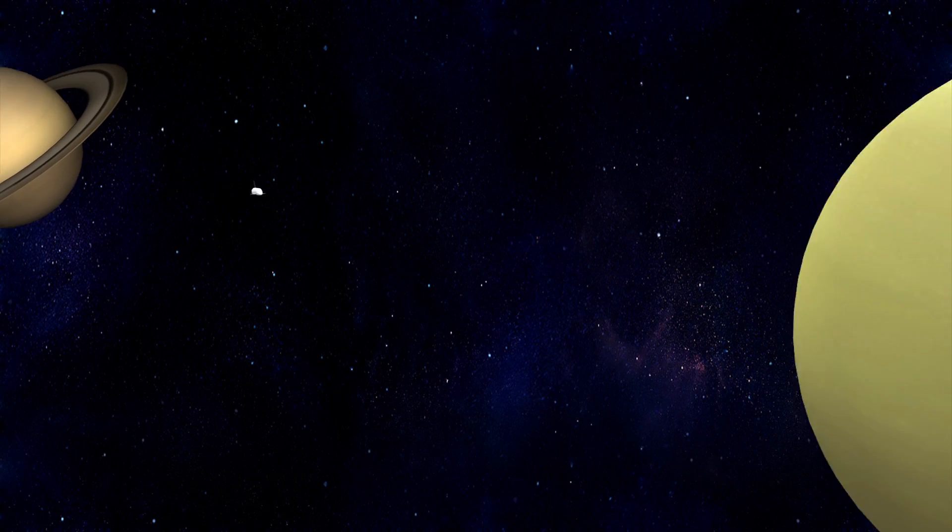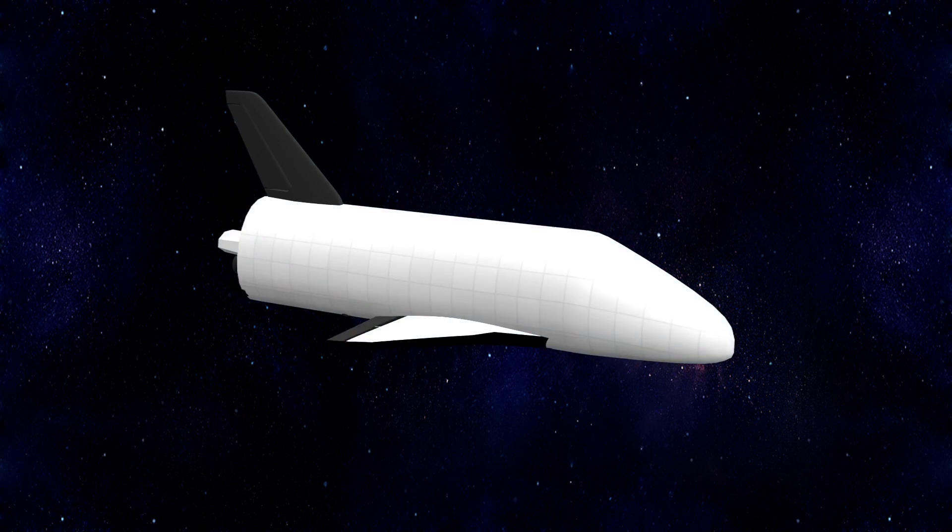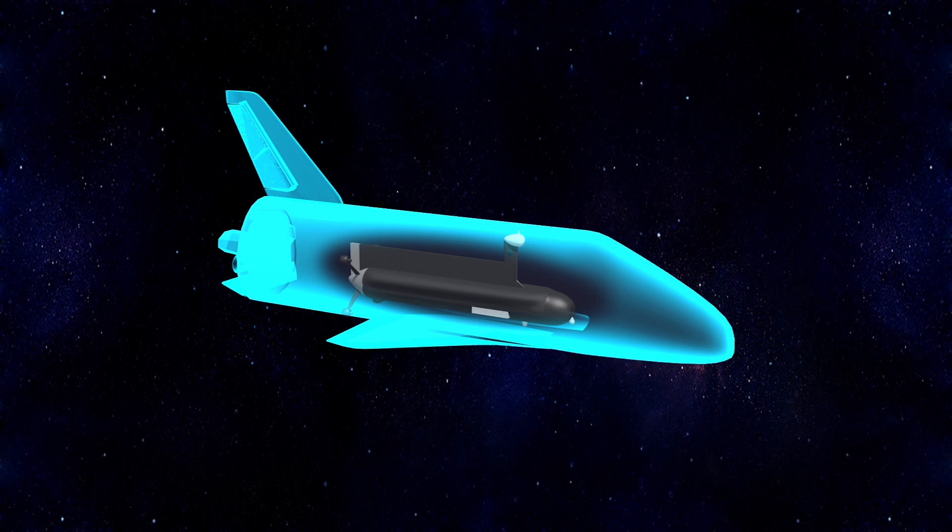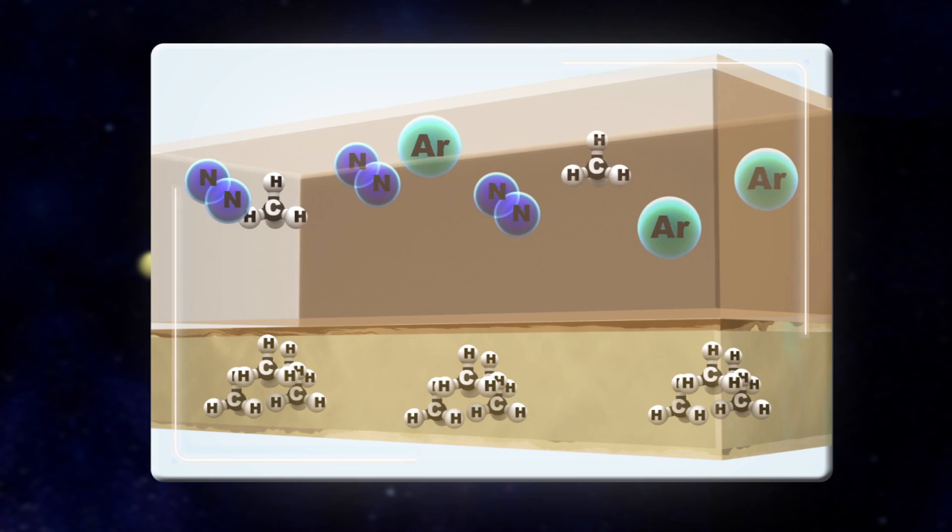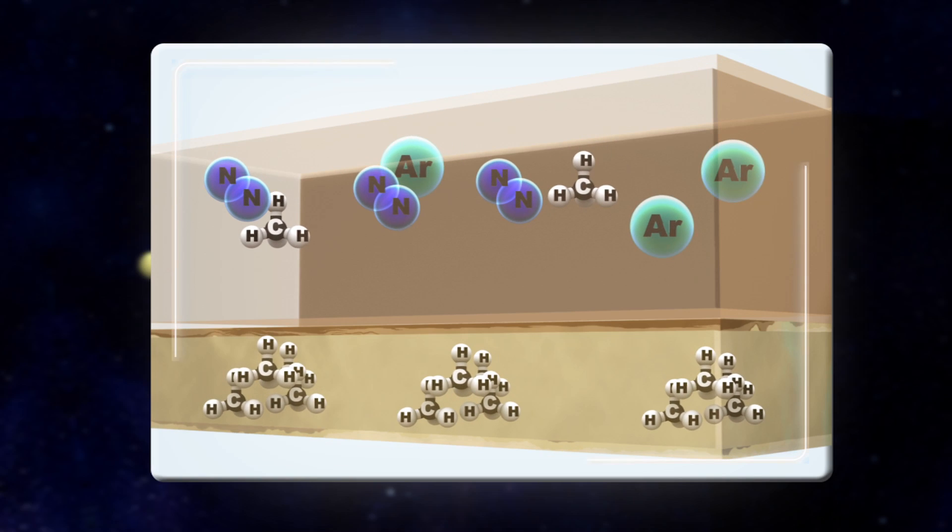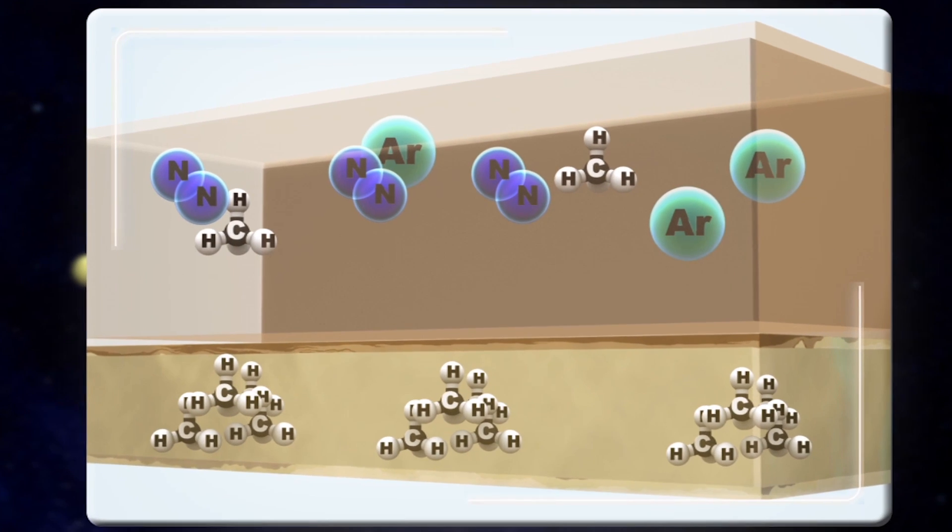The submarine will be carried to Titan by a spacecraft similar to the X-37 orbital test vehicle. Titan's atmosphere is a mix of methane, nitrogen, and argon, and the surface has liquid methane oceans and lakes. Atmospheric pressure is 50% higher than Earth at sea level.